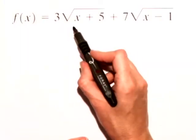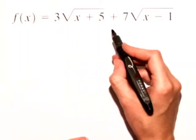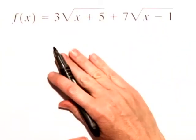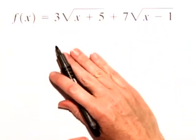First of all, we'll look at our first radical, and then we'll look at the second one. I'm going to use a number line to help us come up with our answer.